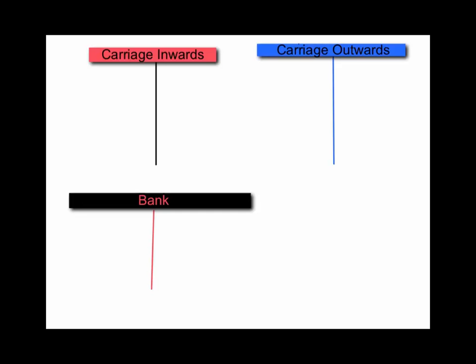So, for example, if we'd bought a batch of toy trains and we'd had to put in £100 worth of petrol, then we would record that going out of the bank account into the debit side of our carriage inwards account, and we would simply cross-reference that with the bank payment that comes out on the credit side.